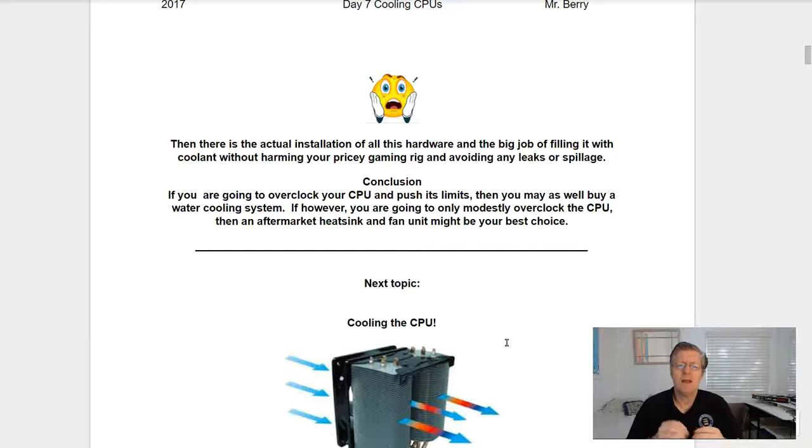Conclusion. If you are going to overclock your CPU and push it to its limits, then you may as well buy a water cooling system. If, however, you are going to only mostly overclock the CPU, then an aftermarket heat sink and fan unit might be your best choice here.